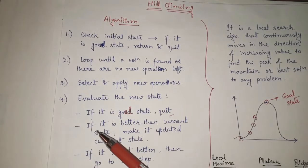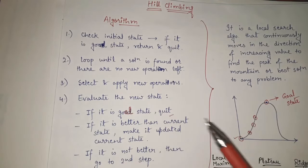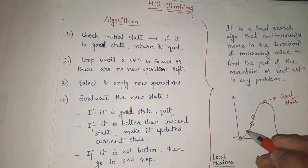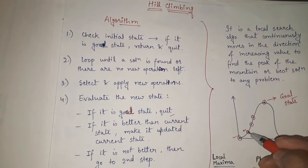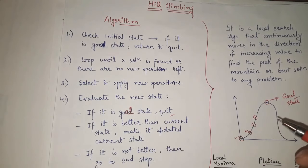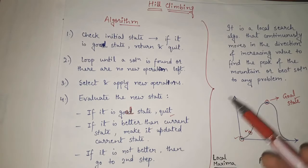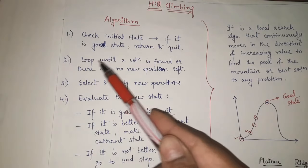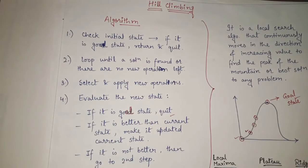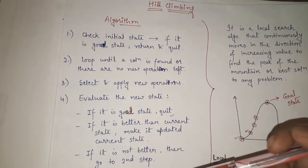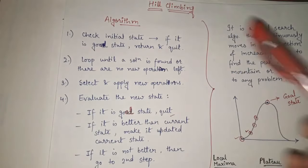If the new state is not the goal state, we check if it is better than the current state. If it is better, we make it the updated current state. If it is not better, we go back to step two and continue looping. We perform these steps one by one until we find the best state — the highest point on the hill.